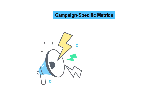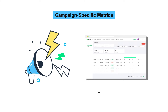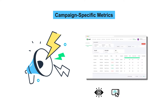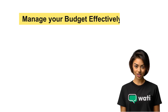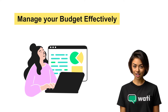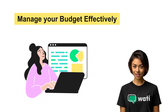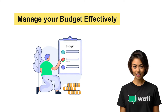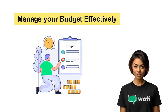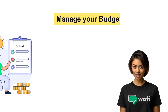Dive deep into each campaign's effectiveness. Check out the impressions, clicks, and most importantly, the contacts metric to evaluate engagement levels. In your Wadi analytics, you'll find detailed data for each ad campaign. Monitor your ad spend against impressions and clicks to calculate the cost per result. This will help you manage your budget more effectively.